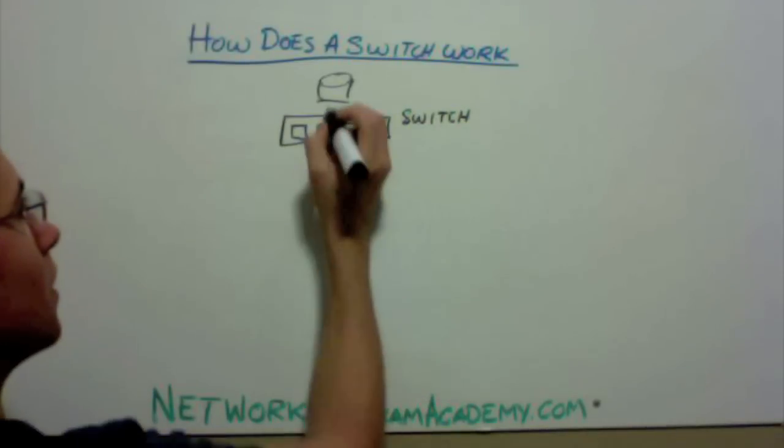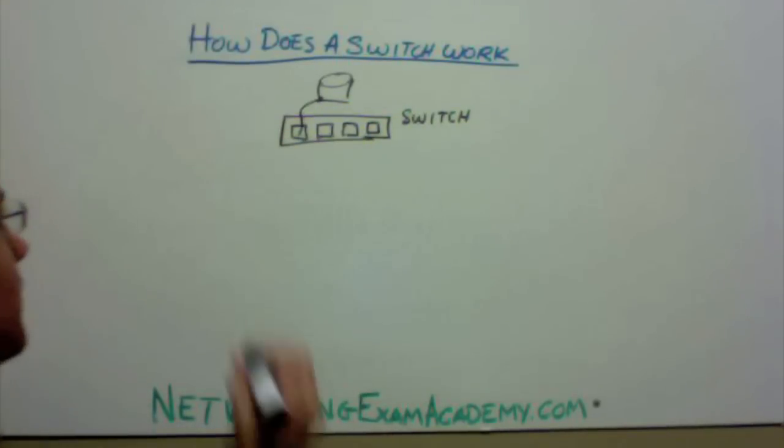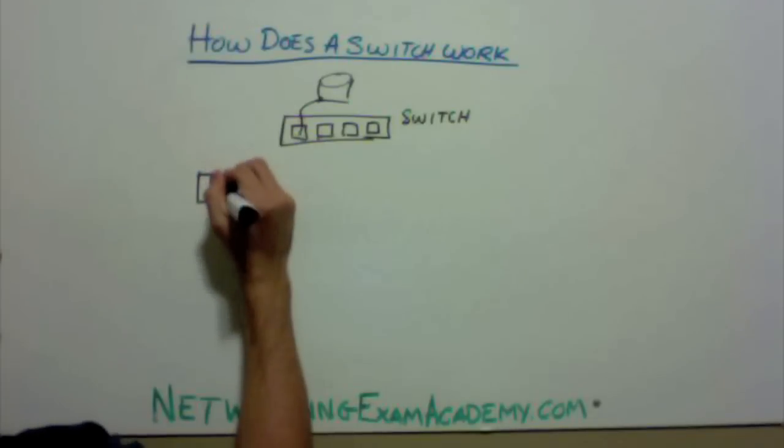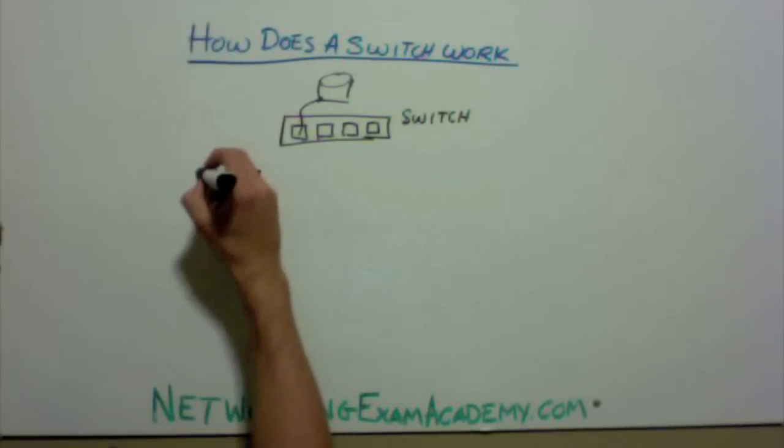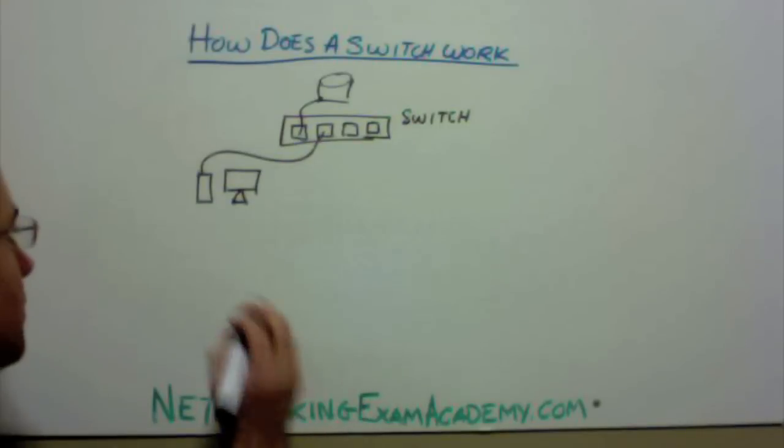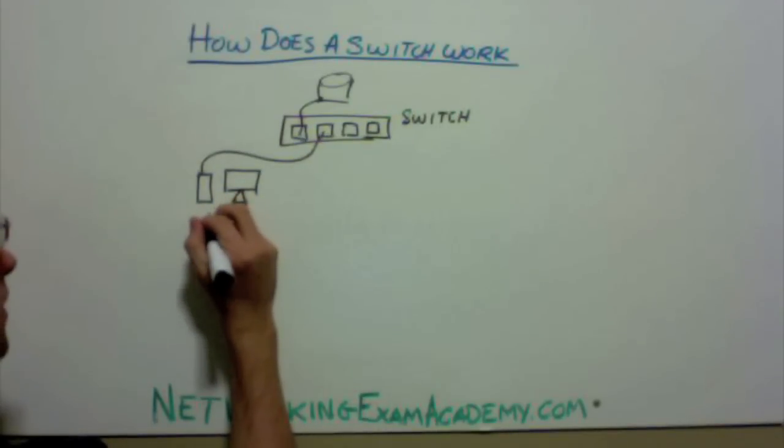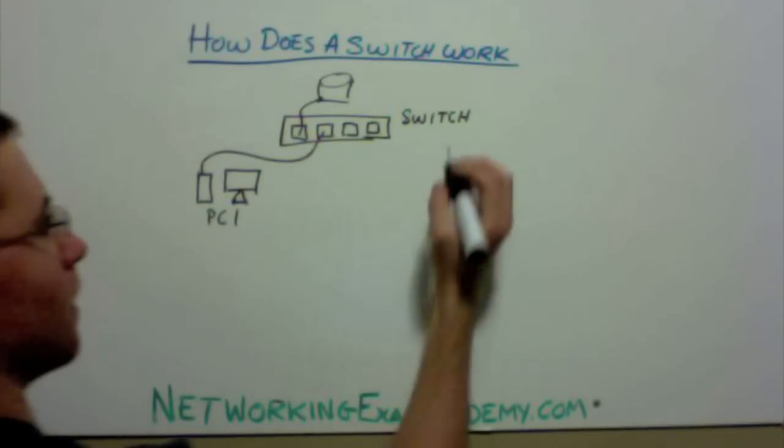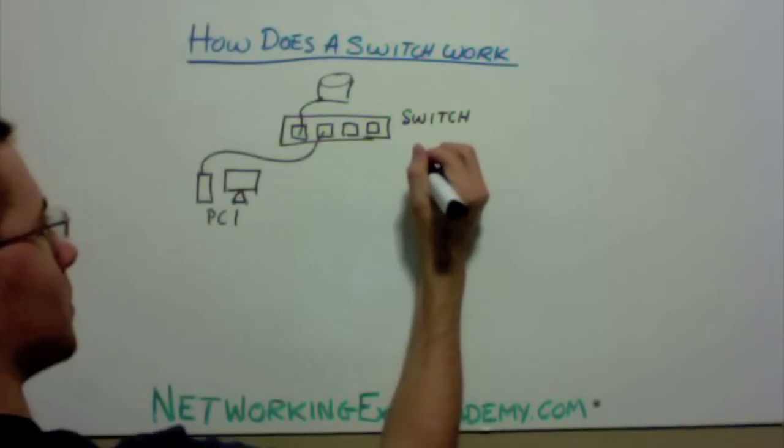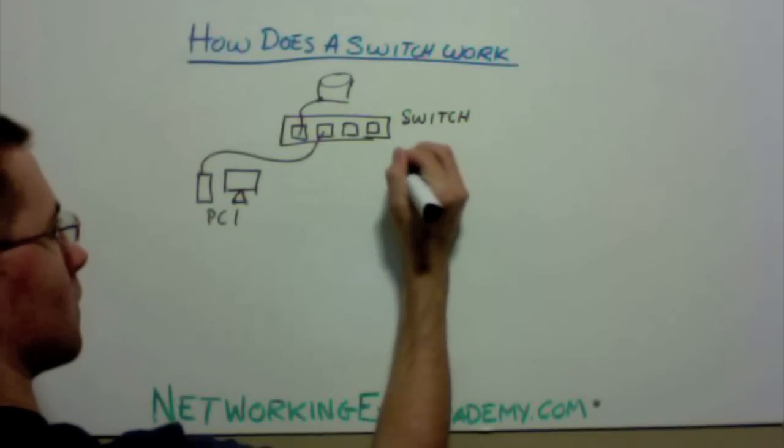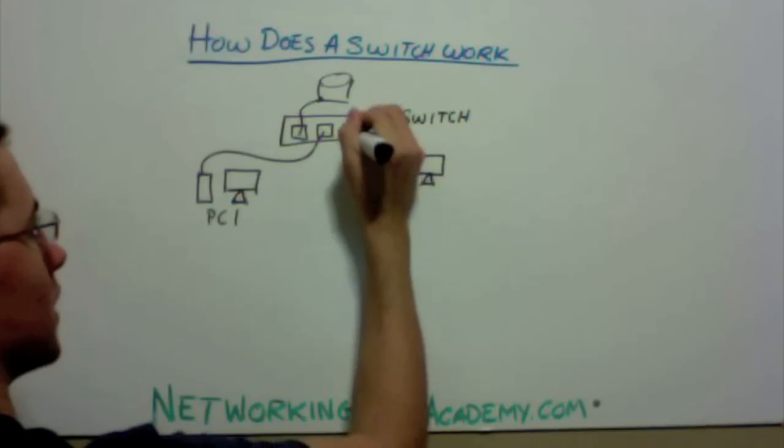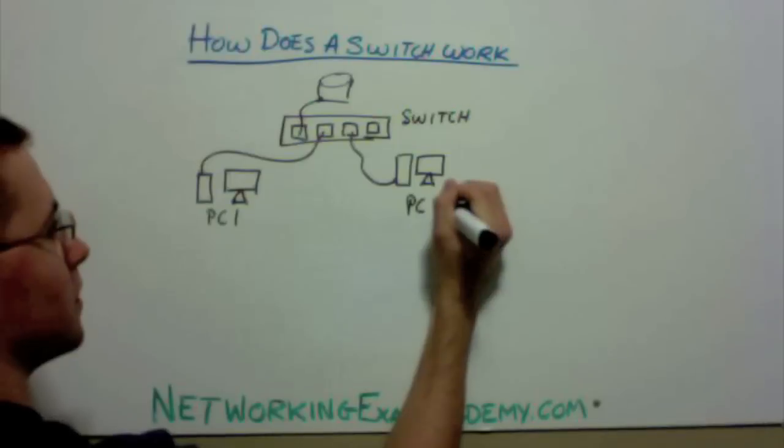Now let's plug the router into the port. Now let's draw a couple computers. Plug the computer into switch port 2. Call this PC1. Let's draw another computer over here. Plug that into port 3, PC2.